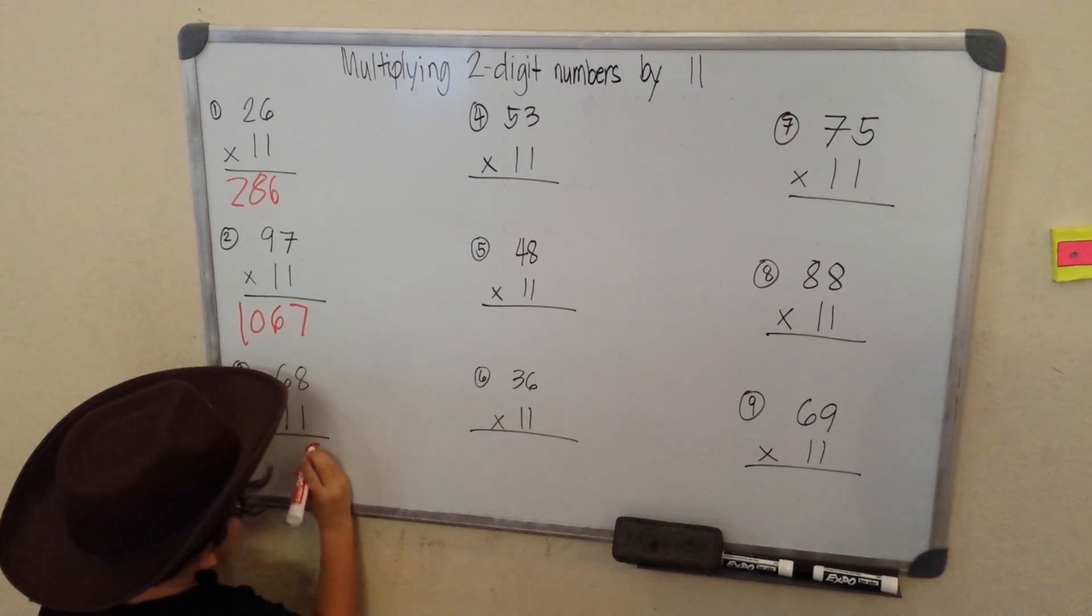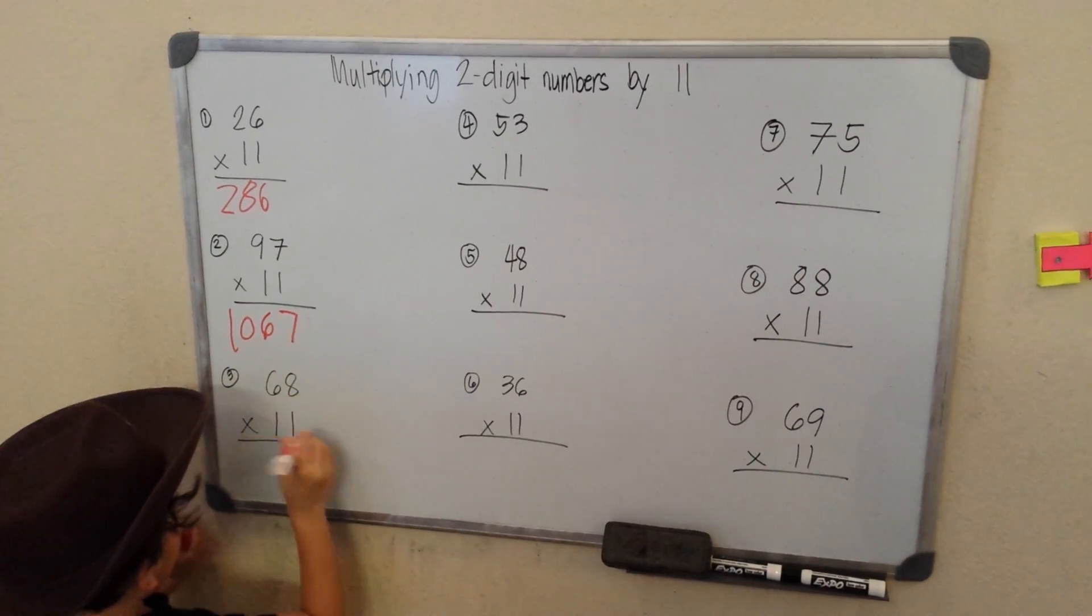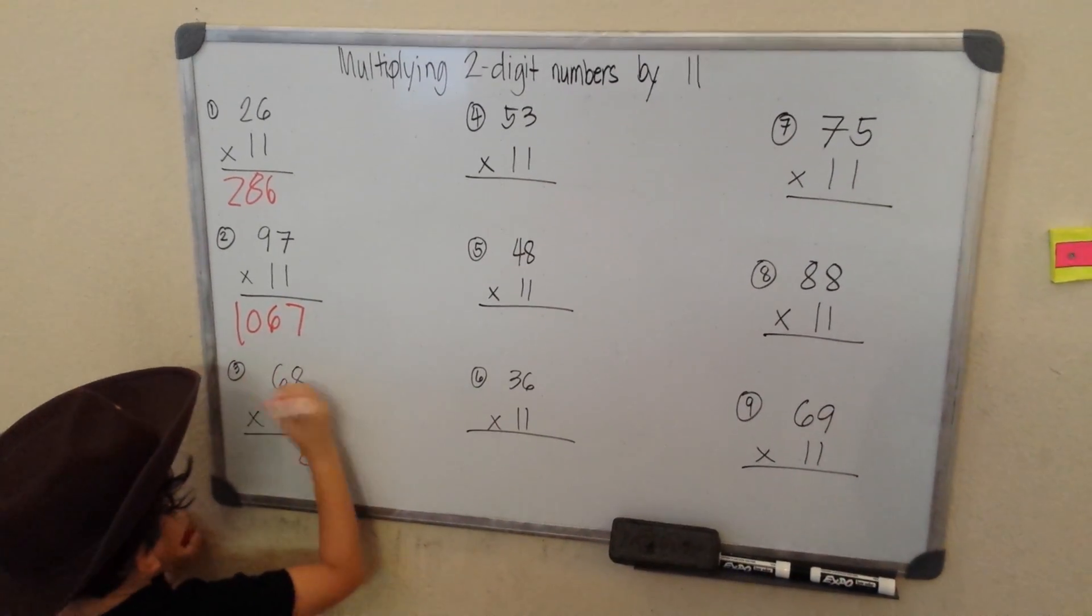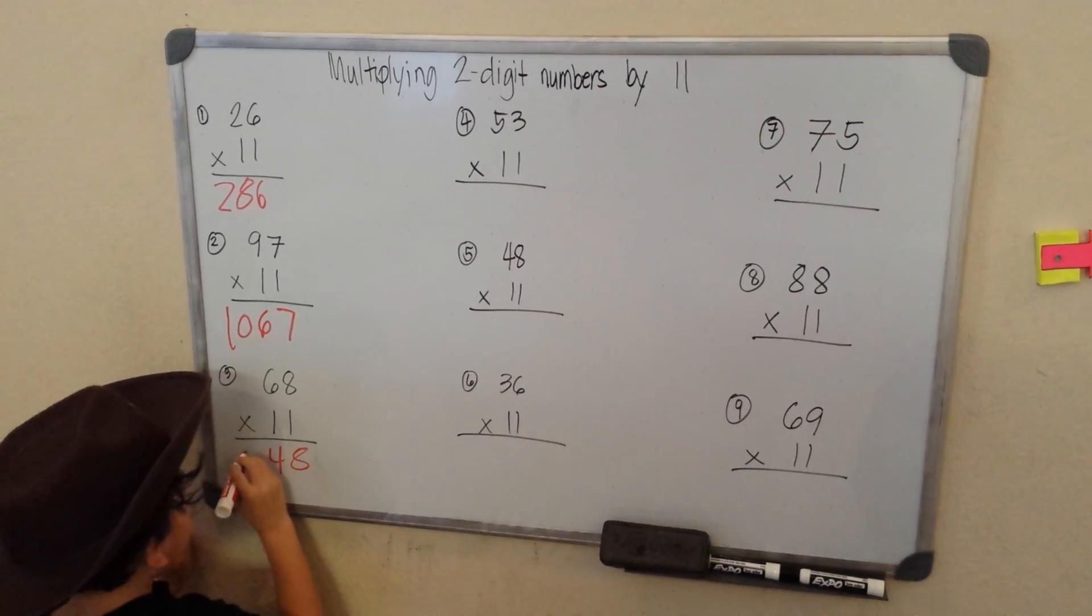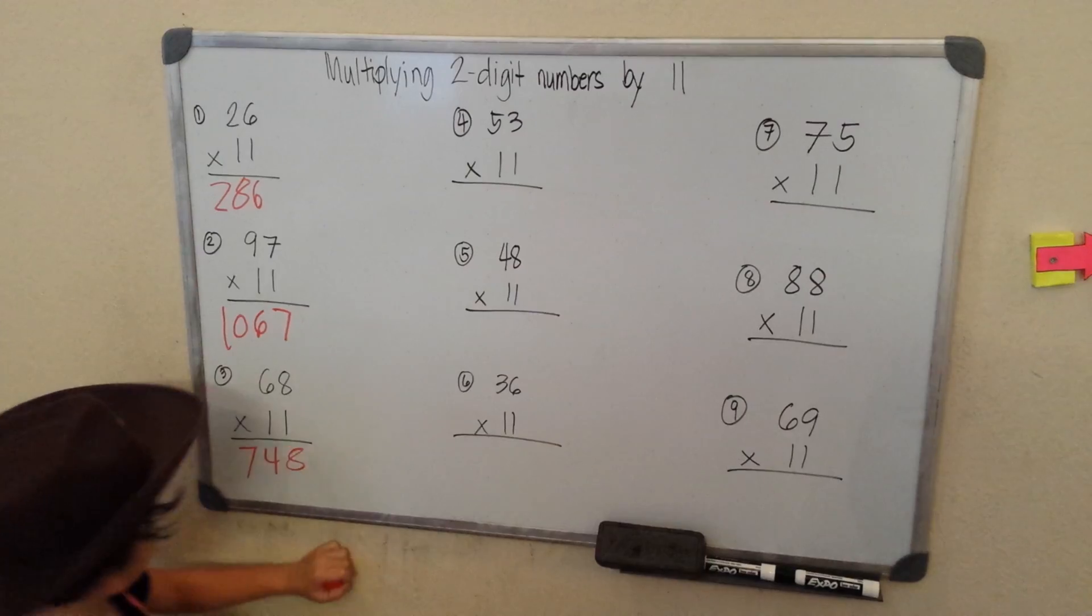Copy the 8. 6 plus 8, that makes 14. Carry 1, 1 plus 6. 7, 748.